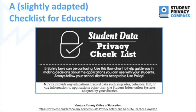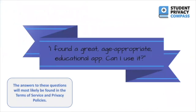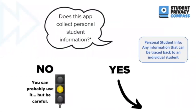Here's a slightly adapted flowchart, provided by Ventura County Office of Education, to help guide your decision in adopting a new tool or app. It starts with finding a great, age-appropriate educational app. Note that answers will most likely be found in the terms of service or privacy policies. The first question to ask is: does this app collect personal student information? Personal student information is any information that can be traced back to an individual student. Most likely the answer is yes, so proceed to the next question. But if the company says no, still proceed with caution and continue to analyze their terms of service — some apps claim they don't collect personal information but may still collect data traceable to individual students.